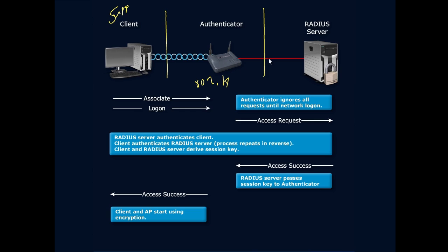The RADIUS server gets that access request from the wireless access point association. After that, the authenticator ignores everything else — it drops all other traffic except for that authentication request. The access request, wrapped up in 802.1x, is passed along to the RADIUS server. Only that authentication communication is allowed; anything else the supplicant tries to send is dropped.